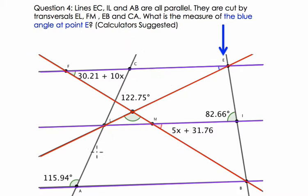And EB and CA. So EB is here, and CA is here. These lines aren't parallel to each other, but they're transversals. Remember that transversals are just lines that cross parallel lines. They want to know here what's the measure of this blue angle at point E, so I'm going to just color that in there. Okay, so this is the angle we're going for. This is our goal.